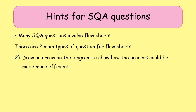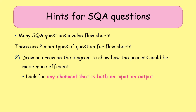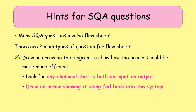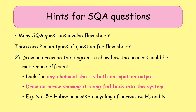The second type of question is 'draw an arrow to show how a process can be made more efficient.' This is just identifying where chemicals can be recycled. Look for any chemical that is both an input and an output of the flow chart, then draw an arrow showing it going from the output back to the inputs — usually from the bottom of the flow chart to the top. You should be very familiar with this because it's exactly the arrow you would have drawn for the recycling of hydrogen and nitrogen in the Haber process.